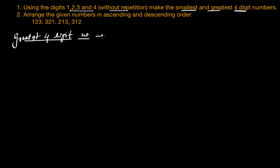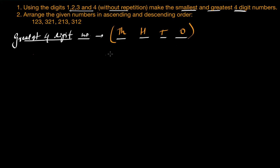To make the greatest 4-digit number, it should have the greatest possible value in the 1000s place. A 4-digit number has a 1000s place, a 100s place, a 10s place, and a 1s place. To maximize this number, I have to put the maximum possible value in the 1000s place.